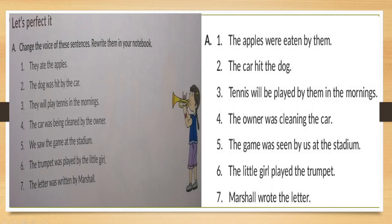Fifth: 'We saw the game at the stadium' — this is active voice. Passive: 'The game was seen by us at the stadium.' 'We' converts to 'us' in passive. Sixth: 'The trumpet was played by the little girl' — passive voice. Convert to active: 'The little girl played the trumpet.' Seventh: 'The letter was written by Marshall' — so active: 'Marshall wrote the letter.'